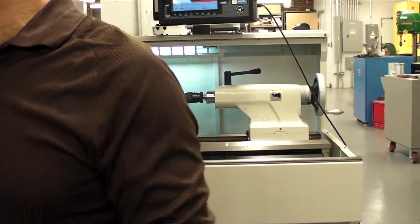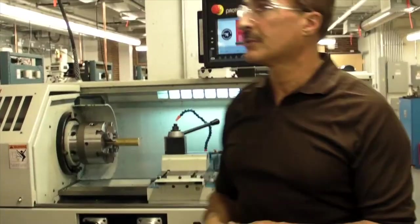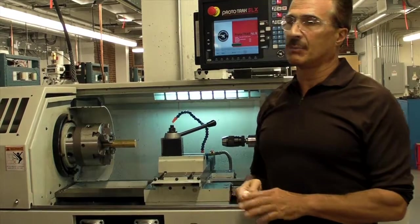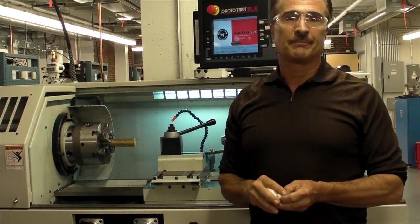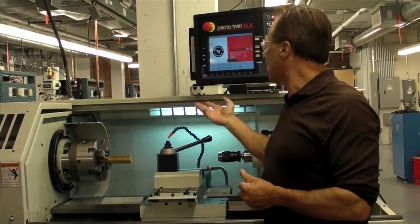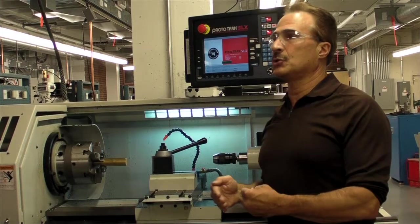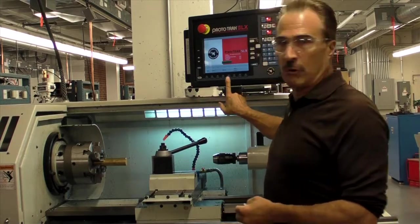And only certain routines can use certain types of tools. So if you choose the wrong tool type, it'll alarm out and tell you. The setup mode will also give you a graphical representation of the part. It'll show the tool path. And you want to do that before you go and run the part.